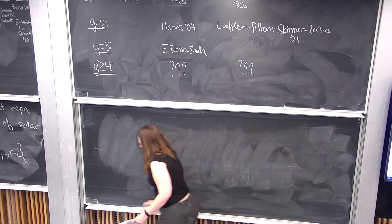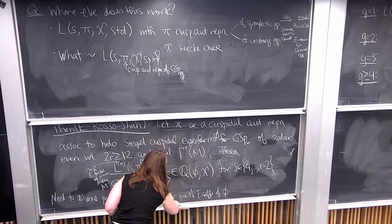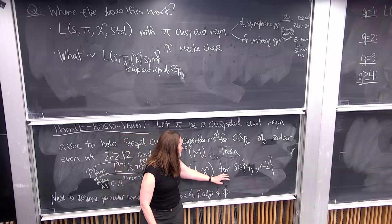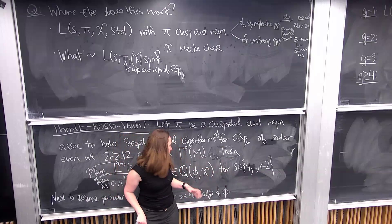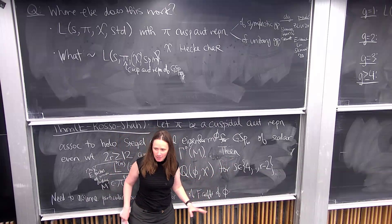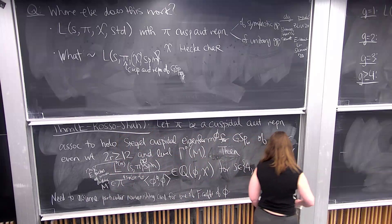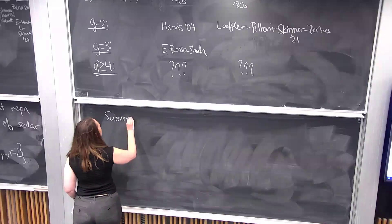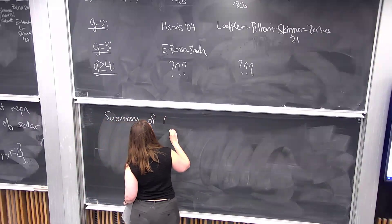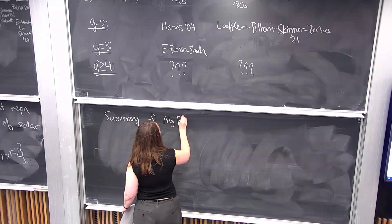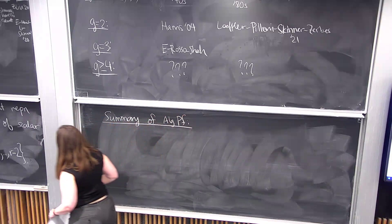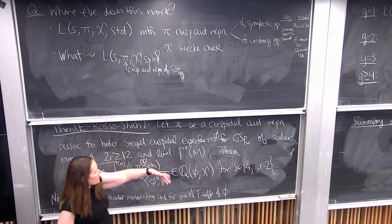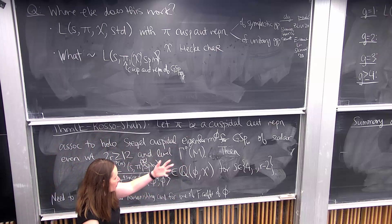If you saw me give a talk about this result when it was in progress, you either saw me say the values were algebraic, or that they were in some finite extension of ℚ, or most recently in this field generated by Fourier coefficients and character values. We've gradually gotten it down and it's not going to get smaller than this — which is good since the paper is basically done.